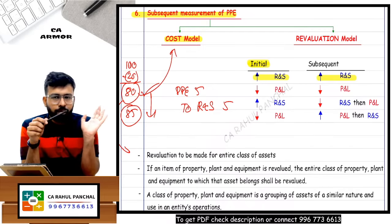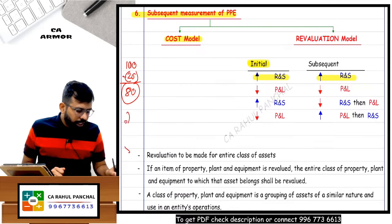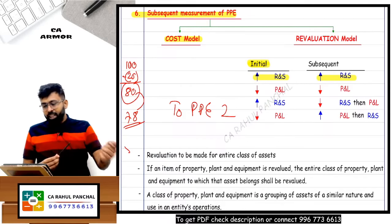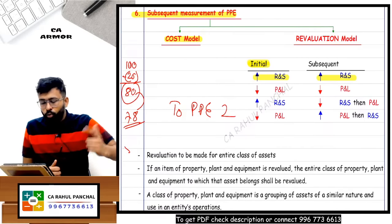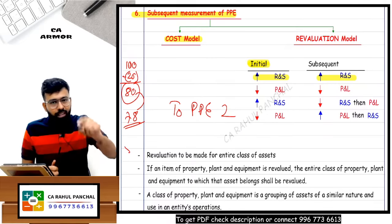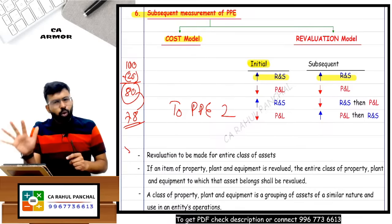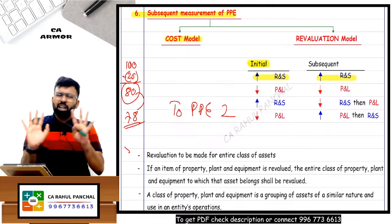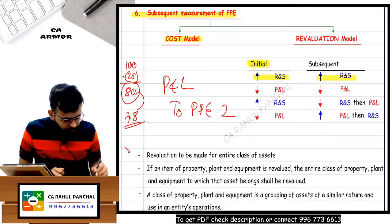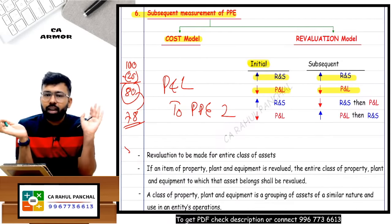If there is downward revaluation - say asset value reduces from 80 to 78, a reduction of 2 rupees - concept of conservatism applies: if there is a loss, show it in the P&L account. If there is a gain, it goes to reserves and surplus. So for downward revaluation, debit P&L account and credit PPE. But first check if there is a reserves and surplus balance from previous upward revaluation - first debit that, and only the excess goes to P&L.